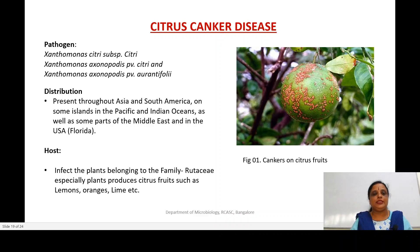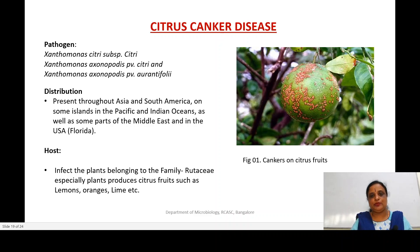Citrus canker has been distributed throughout Asia and South America, and also some islands in the Pacific and Indian Ocean, as well as in some parts of the Middle East and in the USA, especially in Florida. This disease can be found in plants belonging to the family Rutaceae, where most citrus fruit-forming plants are placed. You can come across this disease especially in lemons, oranges, limes, etc.